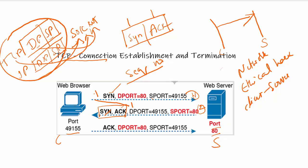The web server adds its own random sequence number — let's say 234. The second packet has source port 80 because it is responding from the web server, and destination port 49155, because that port corresponds to the browser session.